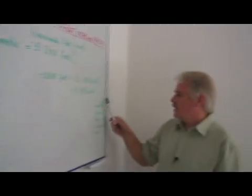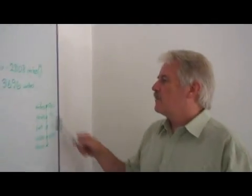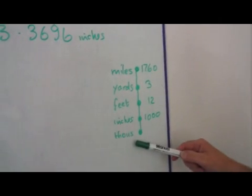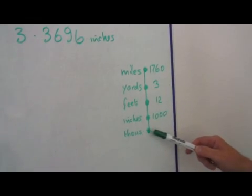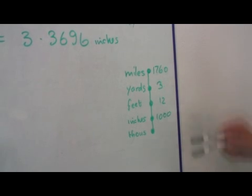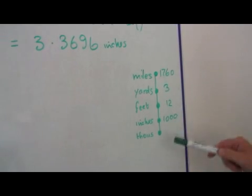At the same time, in America and in Britain, the units used were miles, yards, feet, inches, and eventually thousands, which are used in industry. But here, the ratios are a thousand, twelve, three, and one thousand seven hundred and sixty. Not easy.